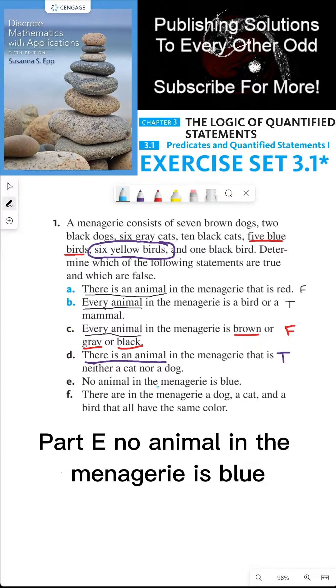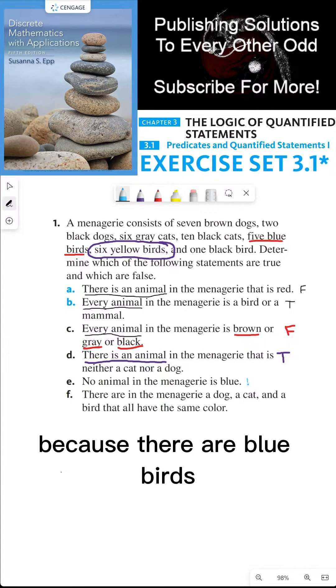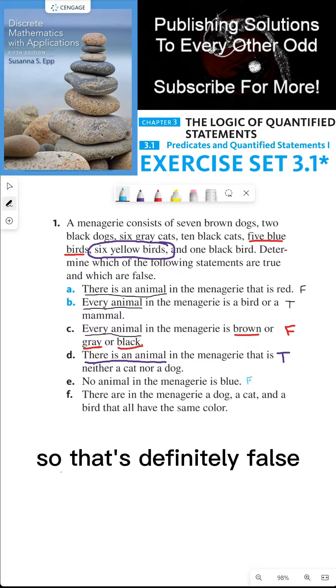Part E. No animal in the menagerie is blue. That's false because there are blue birds. So that's definitely false.